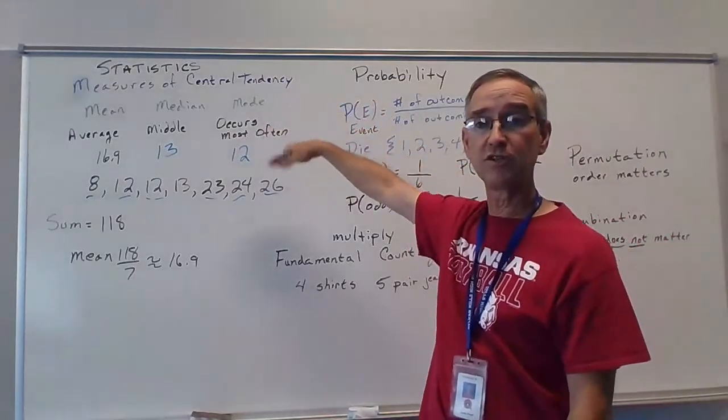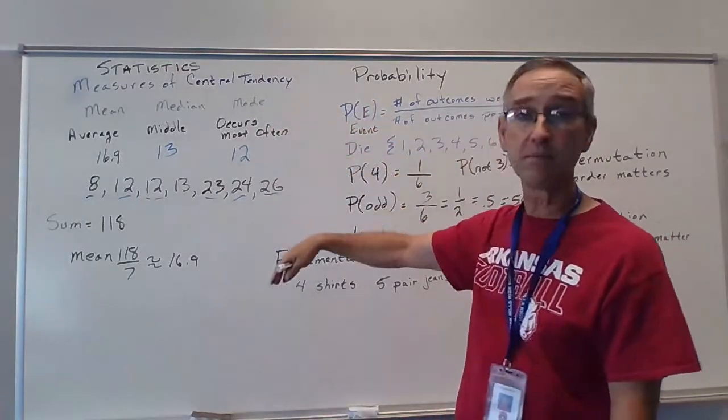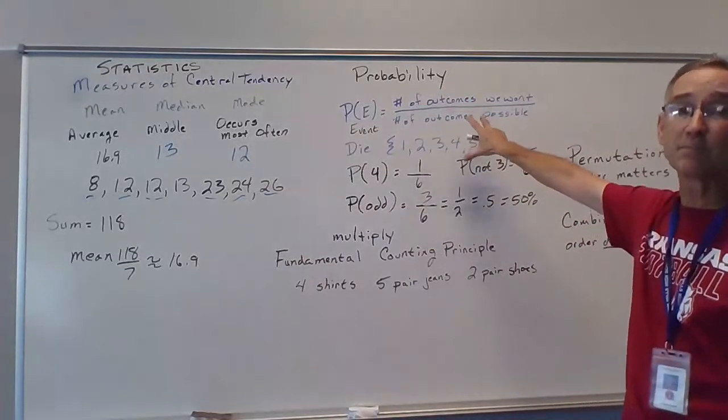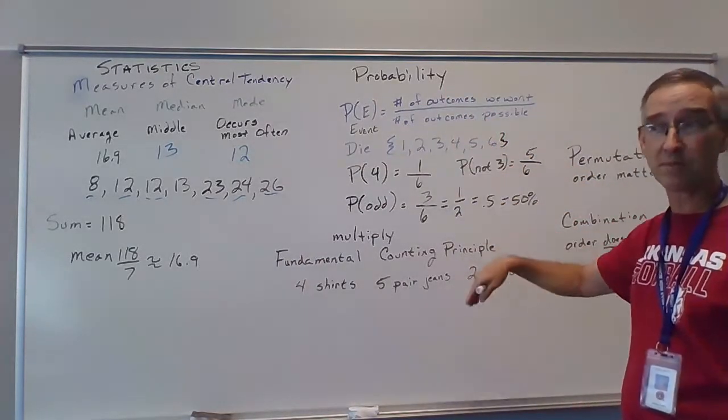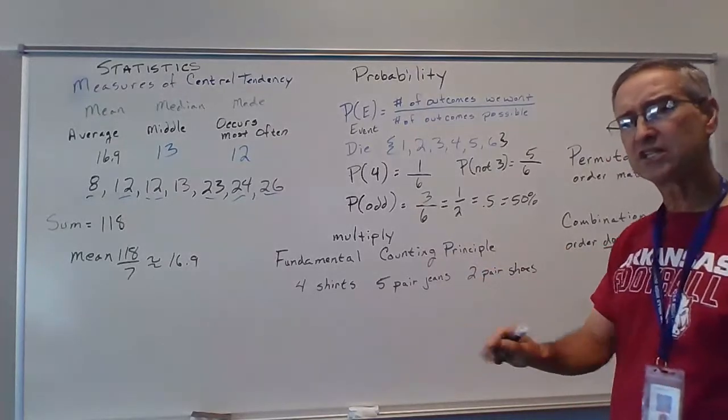Okay? So we've talked about statistics, measures of central tendency, mean, median, and mode. We've talked about probability, simple probability of numbers occurring, what we want to occur over how many possible outcomes. So now let's extend it a little bit more.